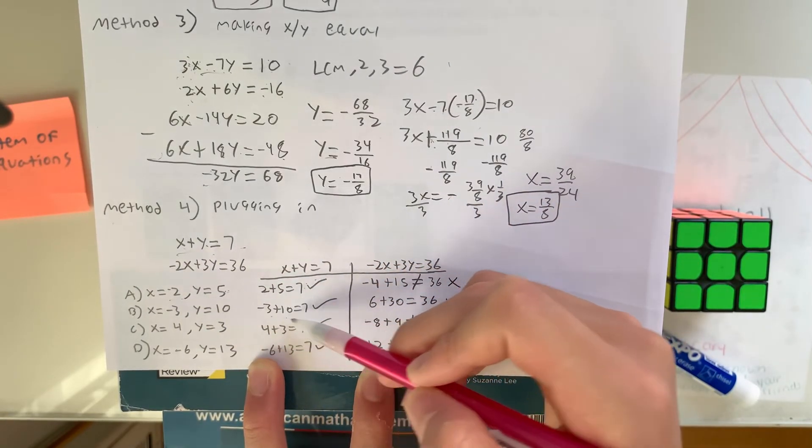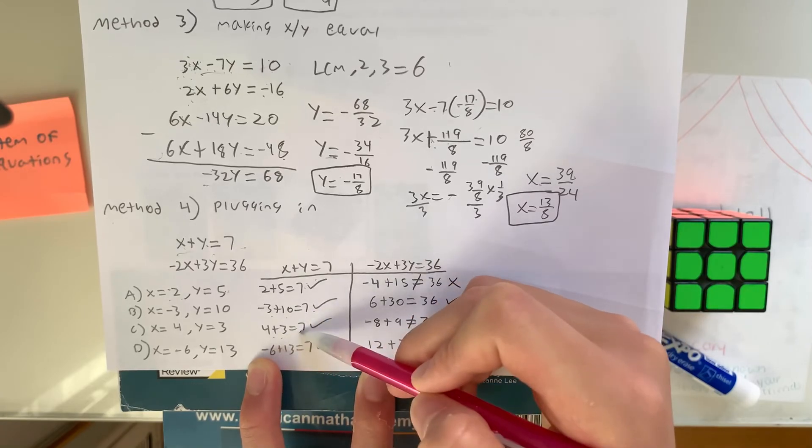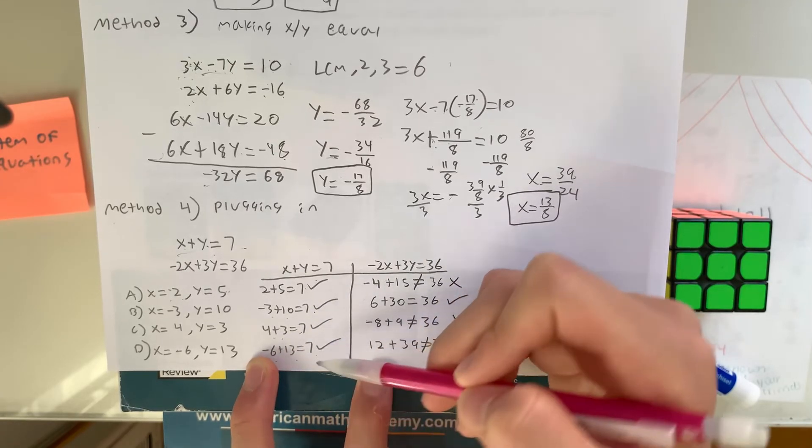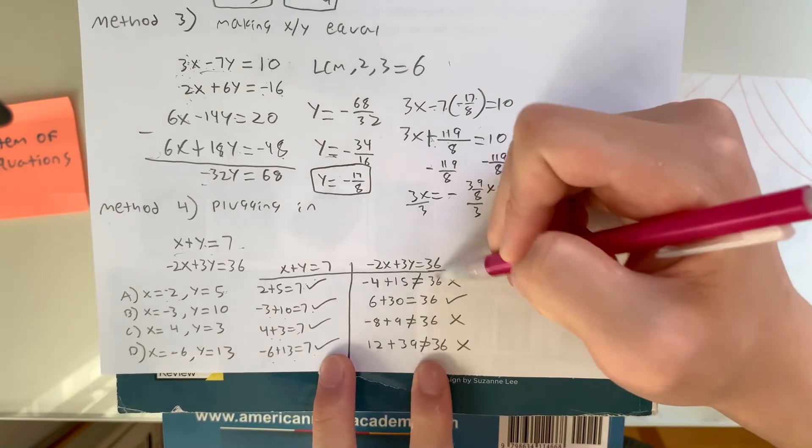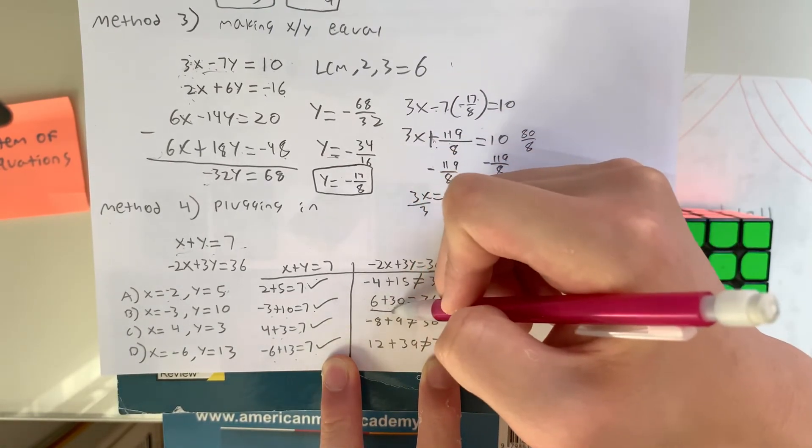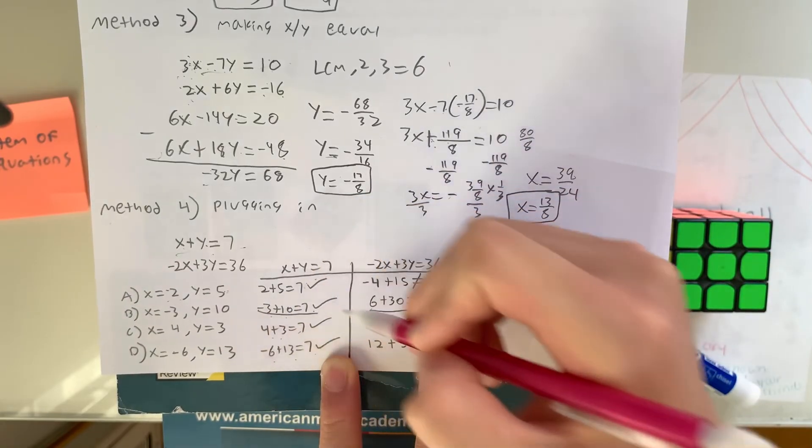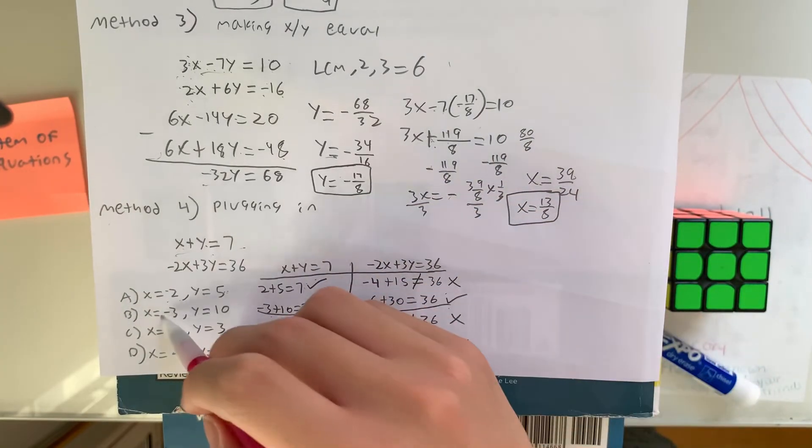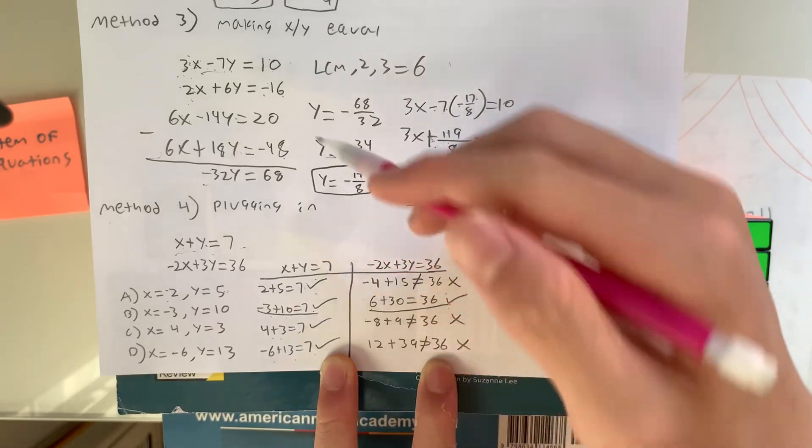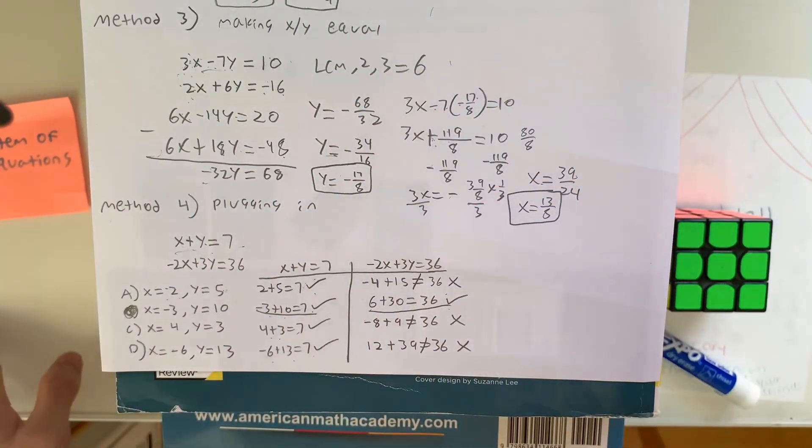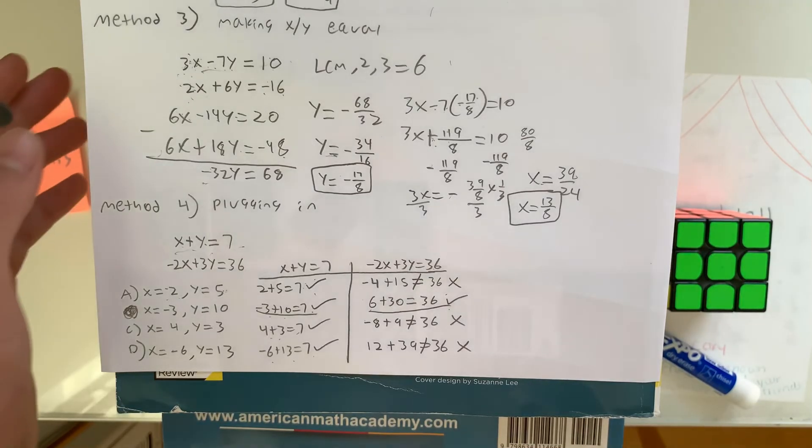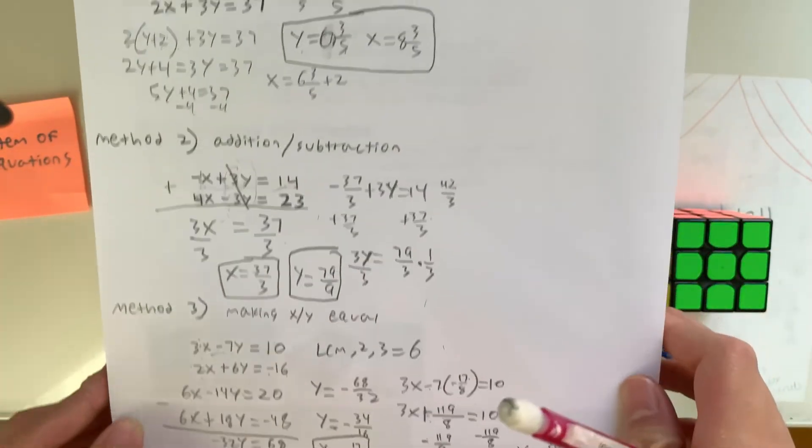2 plus 5 equals 7, negative 3 plus 10 equals 7, 4 plus 3 equals 7, and negative 6 plus 13 equals 7. Next, you're going to try the second equation. Which ones worked for the second equation? Only the second one. Because only the second one worked for both equations when you plugged in the values of x and y, that means our answer is b. So this method only works for multiple choice questions, otherwise you're going to have to stick with these three methods.